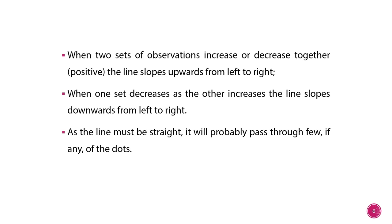When two sets of observations increase or decrease together, then the line slopes upward from left to right. So whenever the value of one variable is increasing and another variable's value is also increasing, the line slopes upward — the slope goes in upward direction from left to right. Opposite to that, whenever one set decreases as the other increases, the line slopes downwards from left to right. Since we are showing a straight line, it will probably pass through few of the dots or instances.